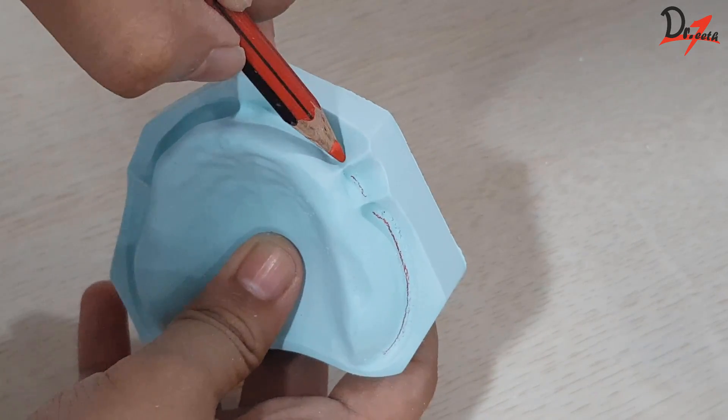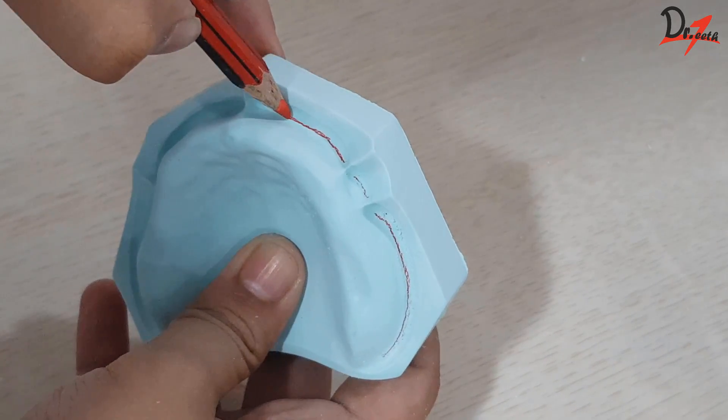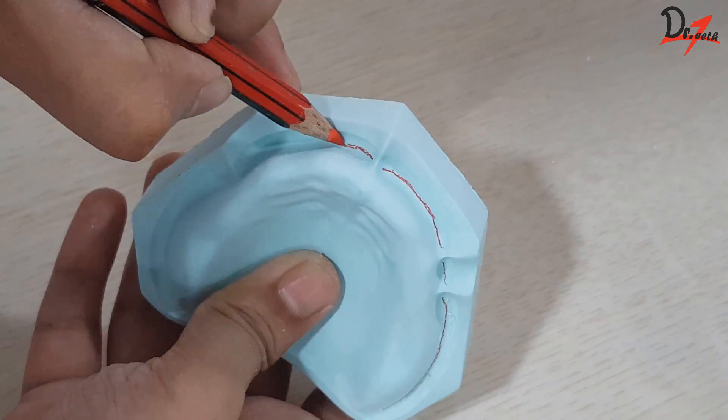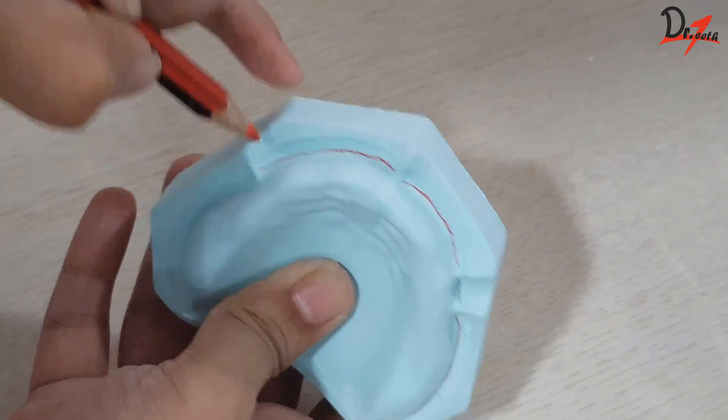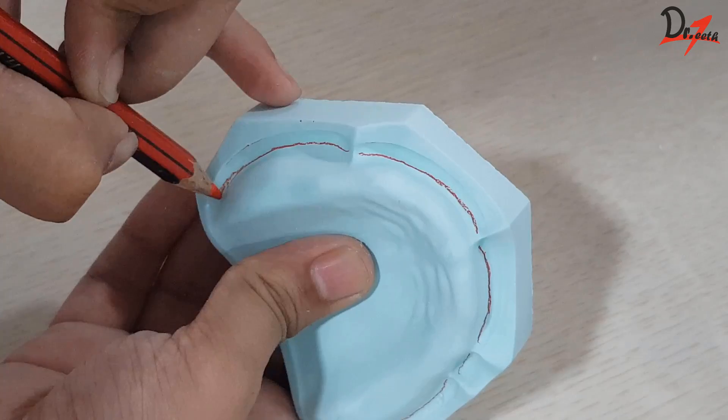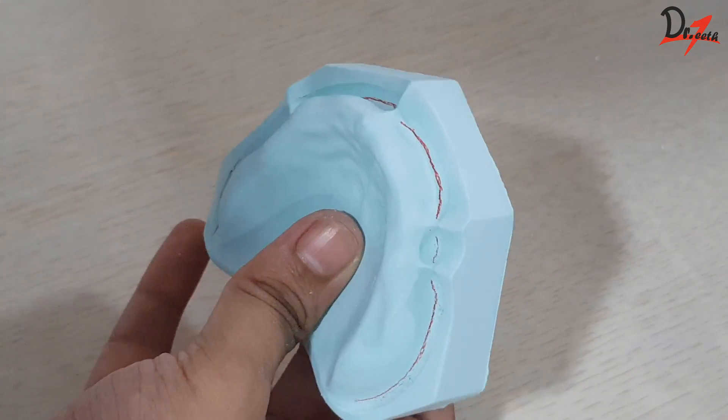So this will help us mark correctly the position of our custom tray, the position of our spacer. Because 2mm above this line should be the custom tray and 2mm further above should be the extension of the spacer.